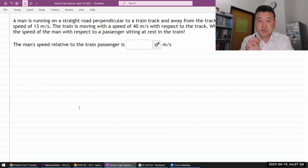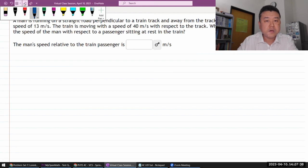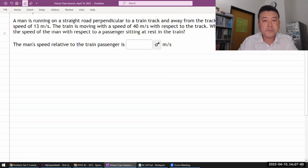Okay, so this is the question. It says a man is running on a straight road perpendicular. Okay, I gotta diagram this.